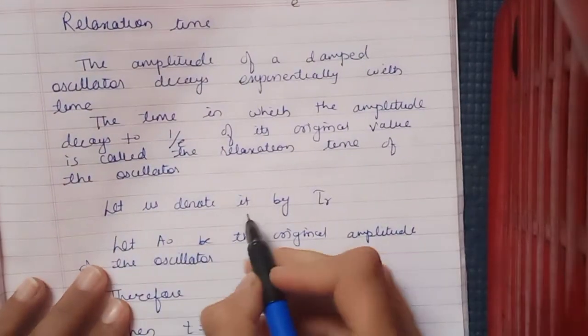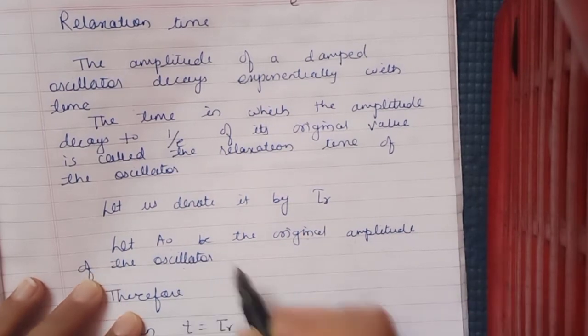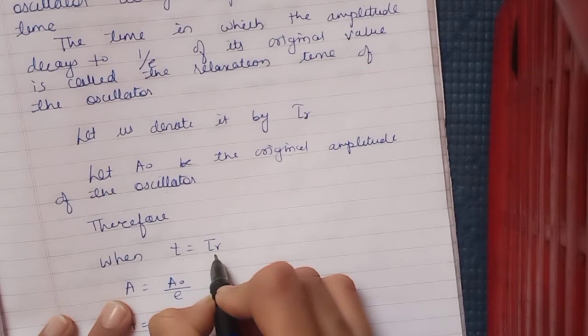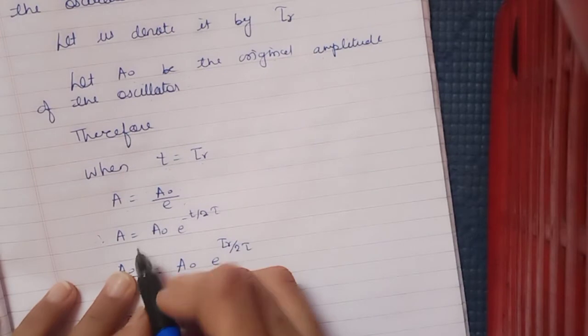Let us denote it by τᵣ. Let A₀ be the original amplitude of the oscillator. So when time equals the relaxation time, amplitude is A₀/e. We will substitute this. We know